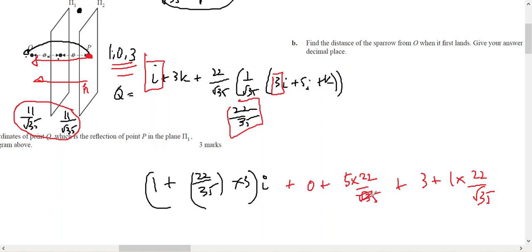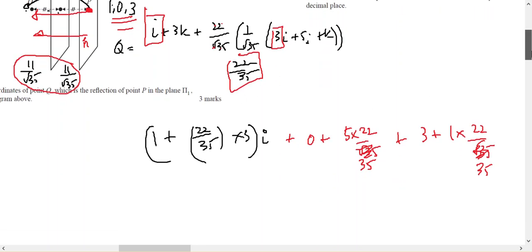And you can work that out to give you an answer. They're all 35, because it was 22 on root 35, but then the magnitude of n is 1 on root 35.